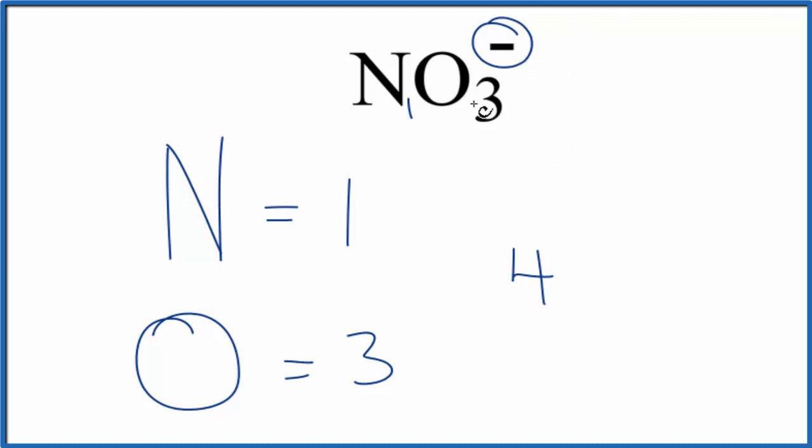So we're finding the number of atoms for NO3-, the nitrate ion. We're going to count the atoms and we're not going to count this electron here.